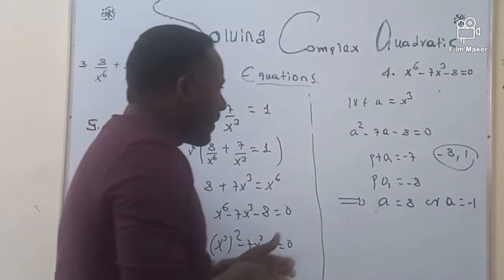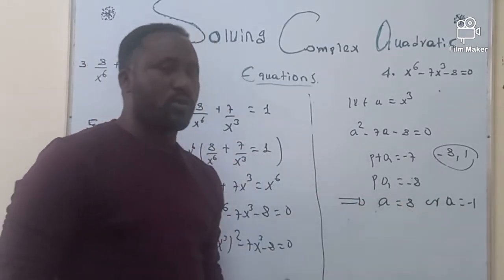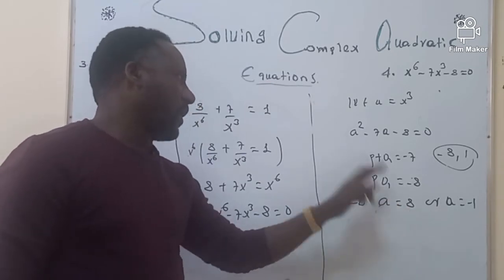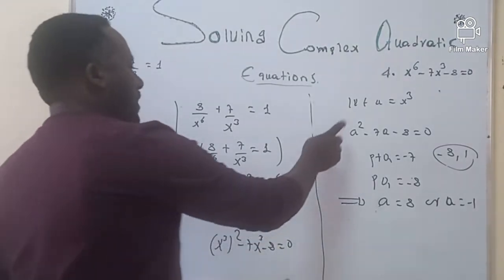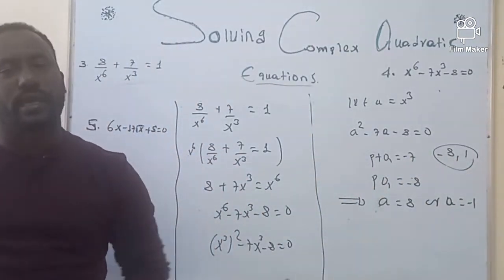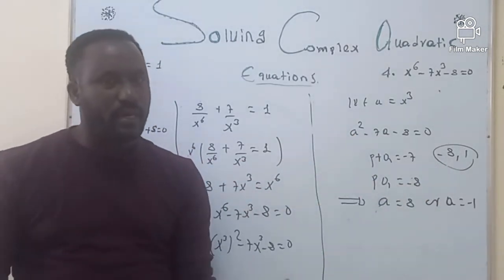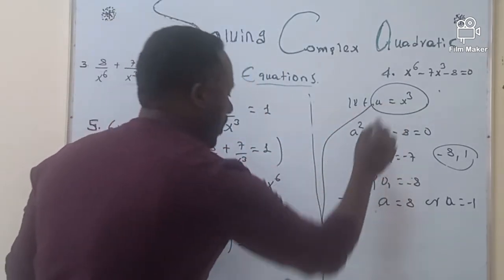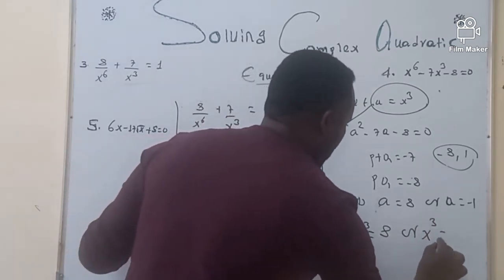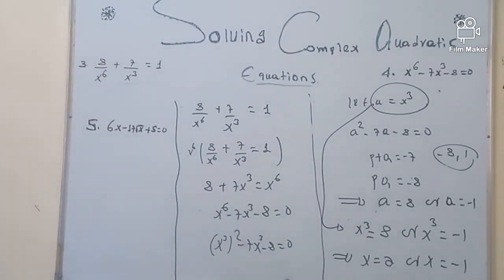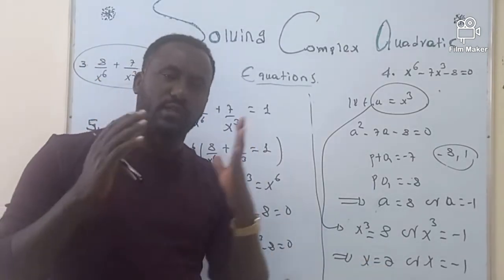Since A equals x cubed, we have x cubed equals 8 or x cubed equals negative 1. Therefore x equals the cube root of 8, which is 2, or x equals negative 1. These are the real solutions of this equation — the only values that satisfy this equation.